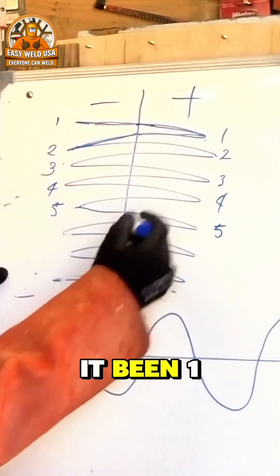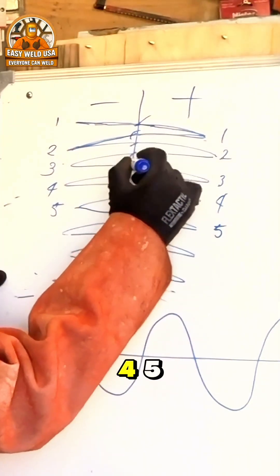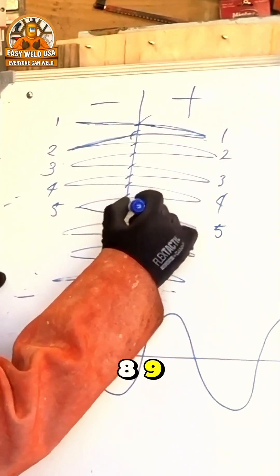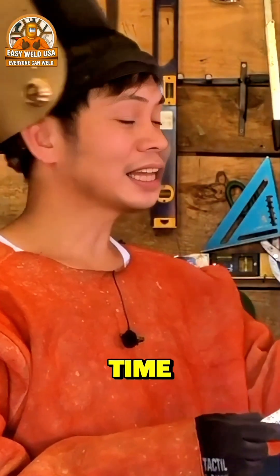But here in the middle, how many times has it been? One, two, three, four, five, six, seven, eight, nine, and ten. Where is it most of the time?